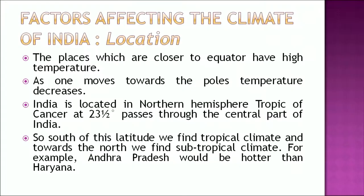What are the factors affecting the climate of India? The first factor is location. Places which are closer to the equator have high temperature; as one moves towards the poles, the temperature decreases. India is located in the Northern Hemisphere and the Tropic of Cancer passes through its central part at 23.5 degrees. So south of this latitude we find tropical climate and towards the north we find subtropical climate. For example, Andhra Pradesh would be hotter than Haryana.